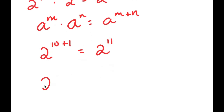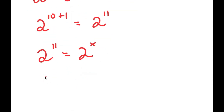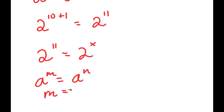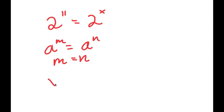So I get 2 to the power of 11 is equal to 2 to the power of x. And since a to the power of m equals a to the power of n means m equals n, in this case x is equal to 11.